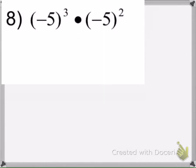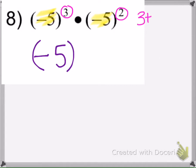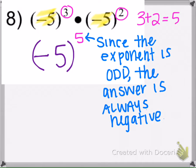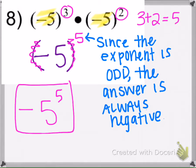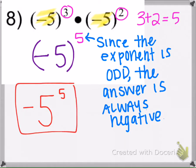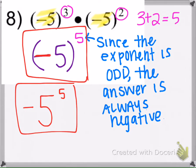Example 8: the bases are both negative 5, so we keep it in parentheses and add the exponents: 3 plus 2 is 5. Since the exponent is 5 — an odd number — there isn't an even amount of negatives being multiplied, so the final answer is always negative. We don't need the parentheses; we can write it as negative 5 to the 5th, and that is our answer.